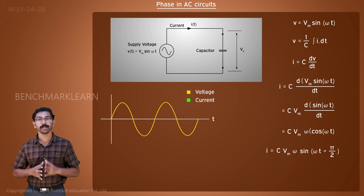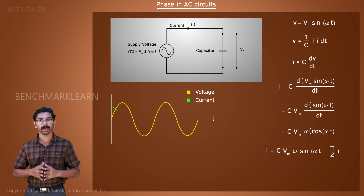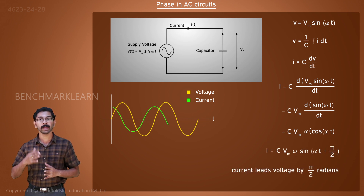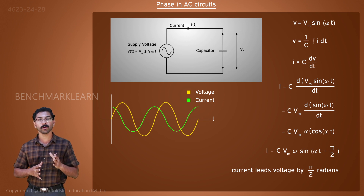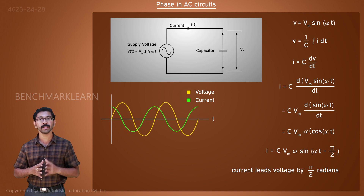In the case of a capacitive load, the current will lead the voltage by pi by 2 radians. The plots of voltage across and current through a capacitor are shown here.